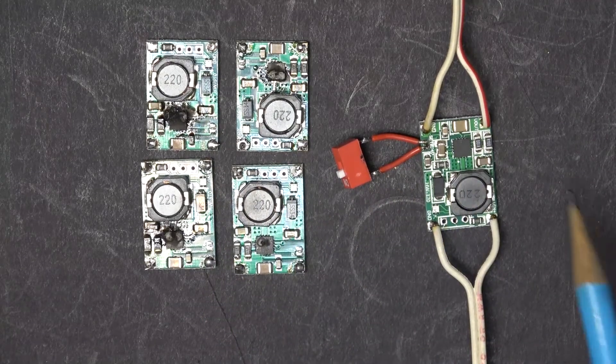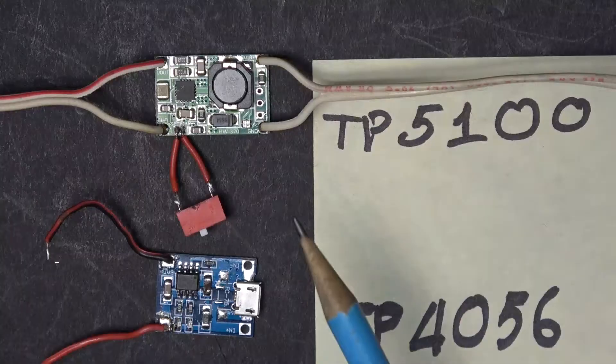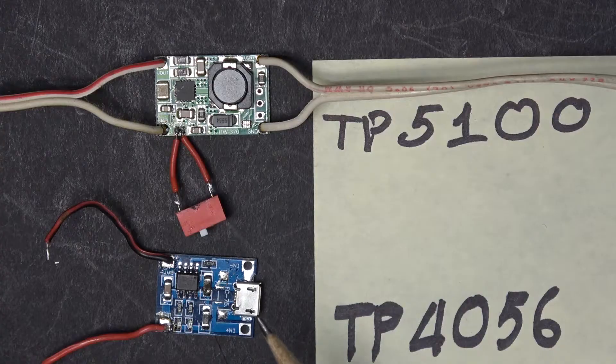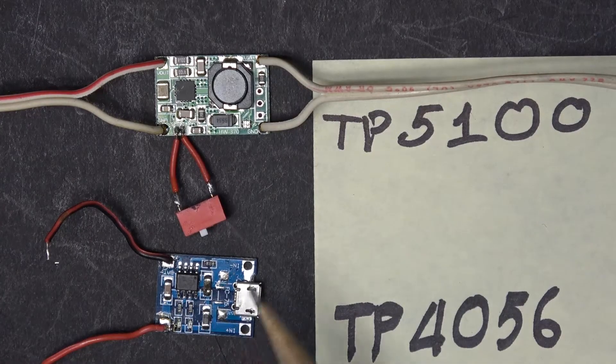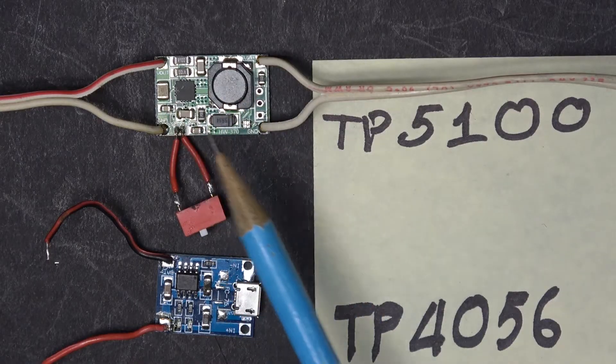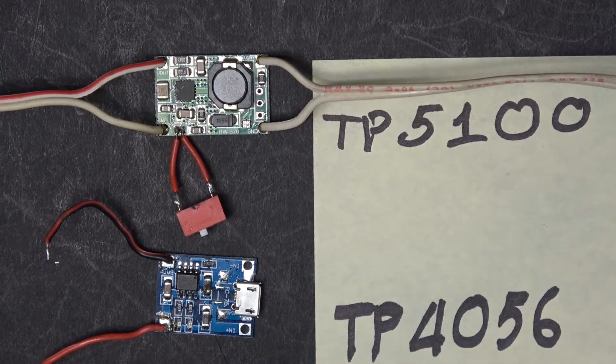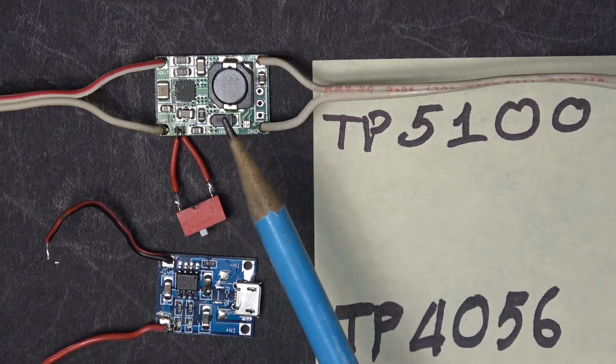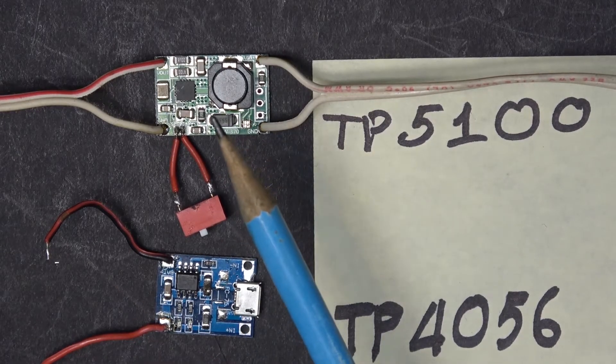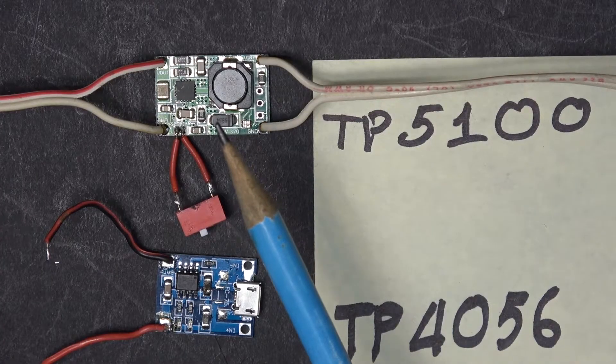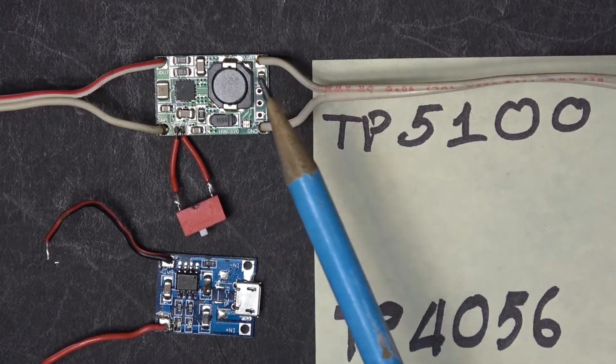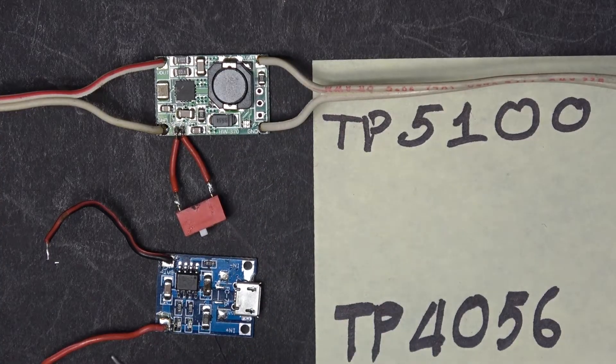The TP5100 board is basically an upgrade for the TP4056 board. The old board can only charge at 1 amp, whereas the TP5100 can charge at 2 amps. There's one more feature for the TP5100: it can charge a 2S lithium-ion battery at 8.4 volts instead of 4.2 volts. How good is it? That's what I'm going to find out in this video.